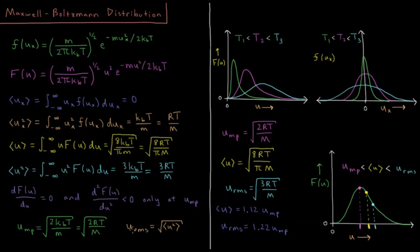Lastly, we have the root mean square speed from our previous video, which is the square root of the expectation value of u squared, equal to the square root of 3RT over M. Due to higher speeds contributing more to the square, the root mean square speed ends up being about 22% bigger than the most probable speed, or about 10% bigger than the average speed. This is our Maxwell-Boltzmann distribution for any gas — if we know its molar mass and the temperature, we can compute its probability distribution, the most likely velocity, the average velocity, or the root mean squared velocity.